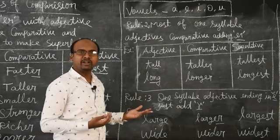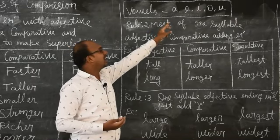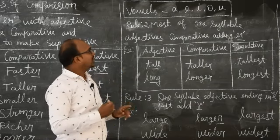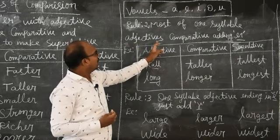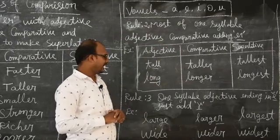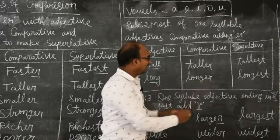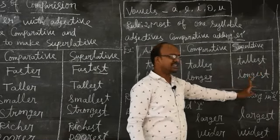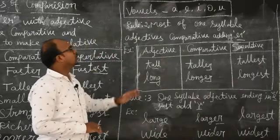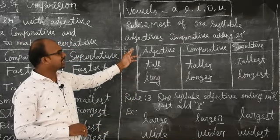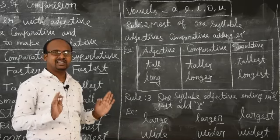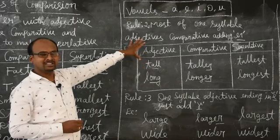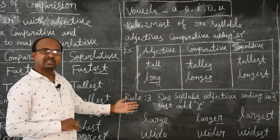'Long' is also a one-syllable word. The dominant vowel sound is 'AH' — only one sound. So this is also a one-syllable word. For comparative, we add ER: 'longer.' Superlative: 'longest.' So, rule two: most one-syllable adjectives in comparative form require adding ER. That is the second rule.